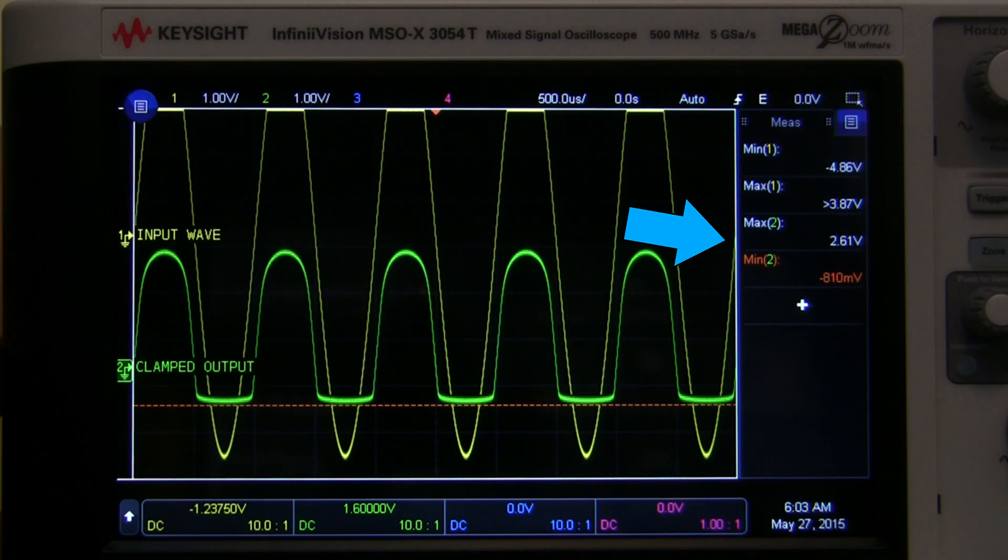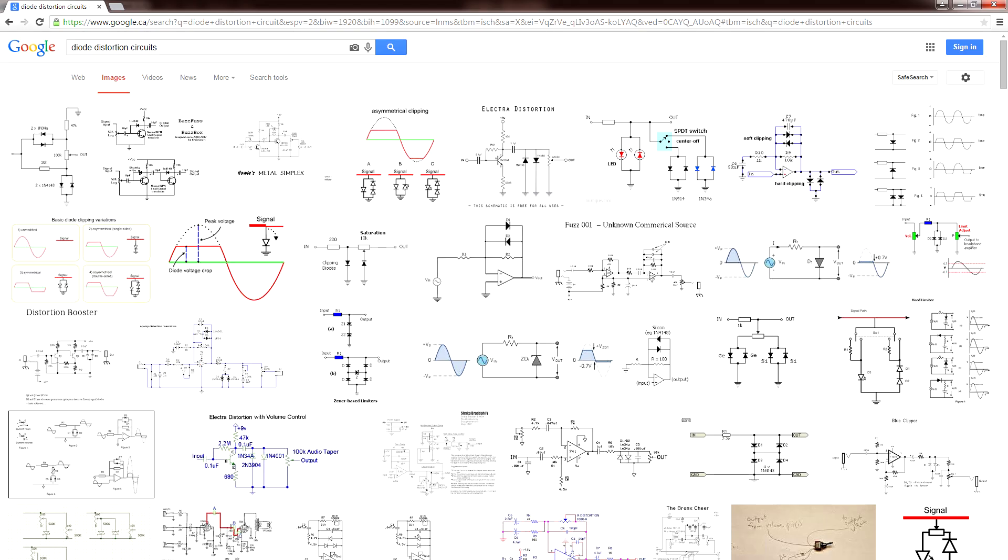Notice how that's different to the minus 1 volt to 3.3 volts I was showing you in the previous example. That's because the exact voltage drop across a Zener diode will depend on the amount of current flowing through it, just the same as any other diode. Anyways, there are lots of different ways to use this technique, and if you search for diode distortion circuits you can find some examples.